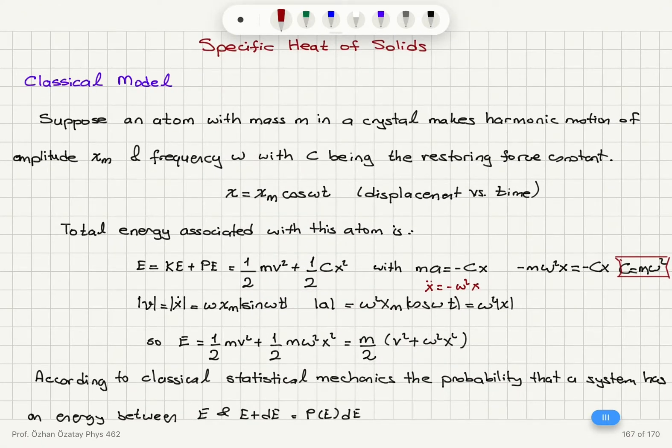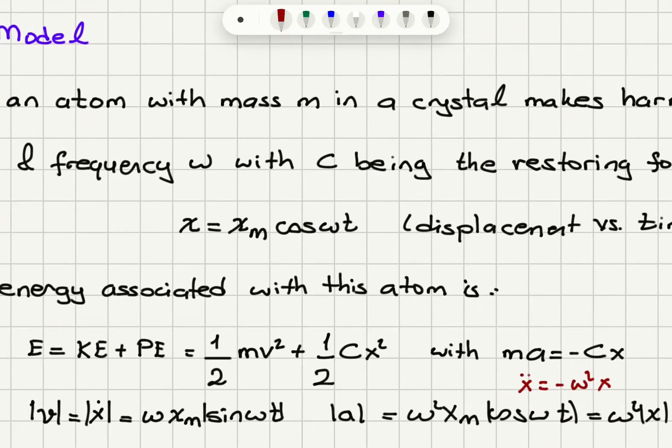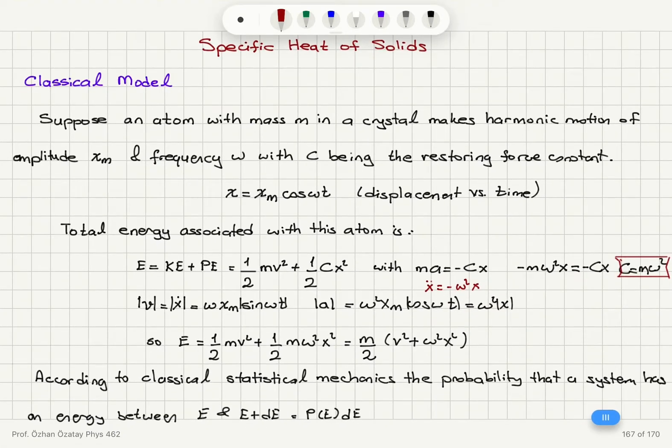If we write the velocity as a function of time, we take the first derivative, and the derivative will give us minus omega xm sine omega t. Absolute value will give us omega xm absolute value sine omega t. Acceleration is second derivative. We will have cosine again, so it will be minus omega squared xm cosine omega t.